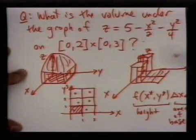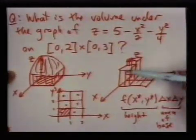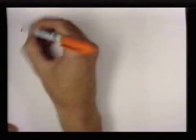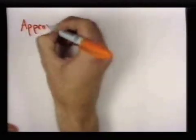And this gives you the volume of one of these approximating rectangular prisms. So right now we can't answer the question of what is the volume under that graph, but we can approximate it by using something similar to a Riemann sum.